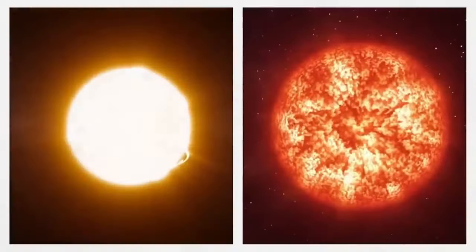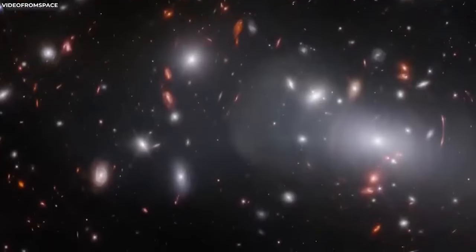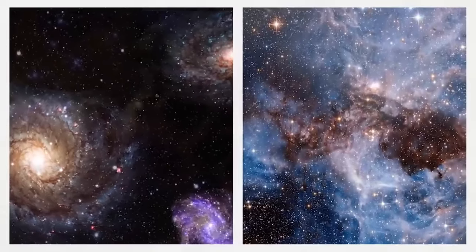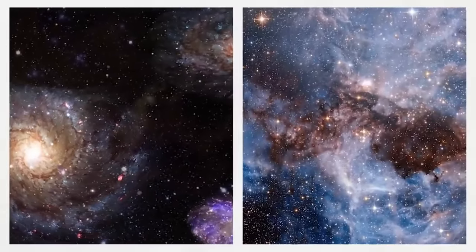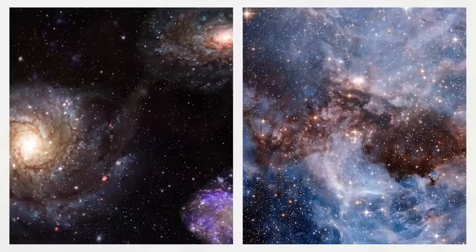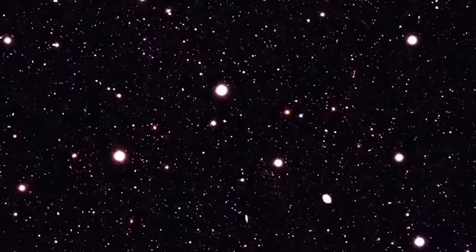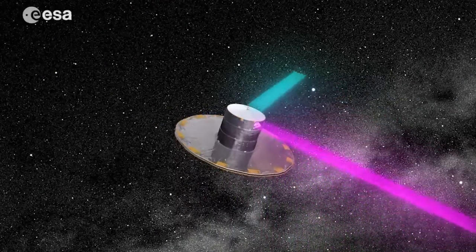You know, like how Neptune takes its time circling the sun while Mercury is speedier. Here's where the plot twists. Rubin and her stargazing squad uncovered a cosmic surprise. Stars at the far reaches of galaxies were moving at nearly the same speed as the ones closer to the cosmic dance floor.